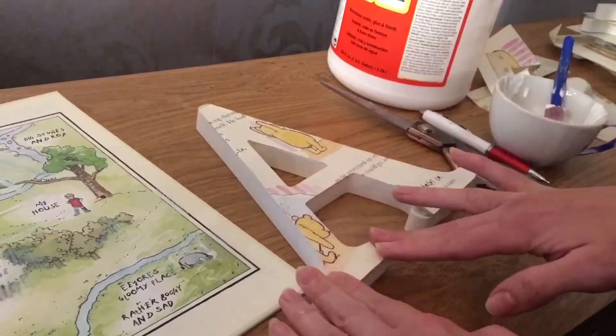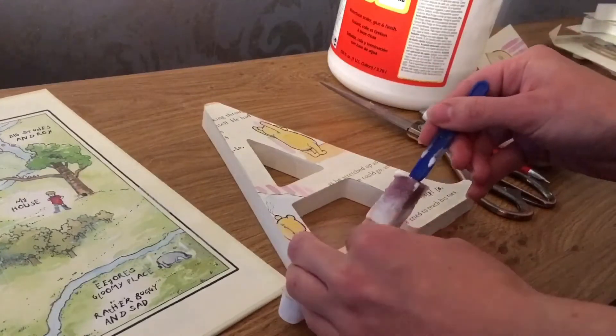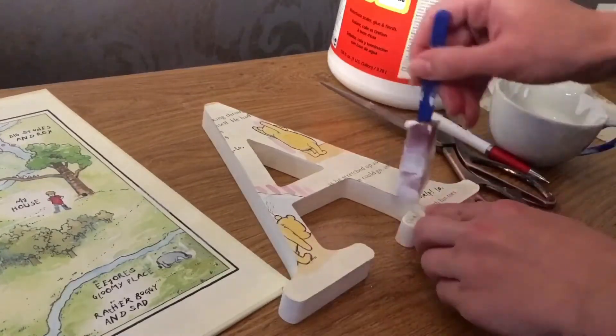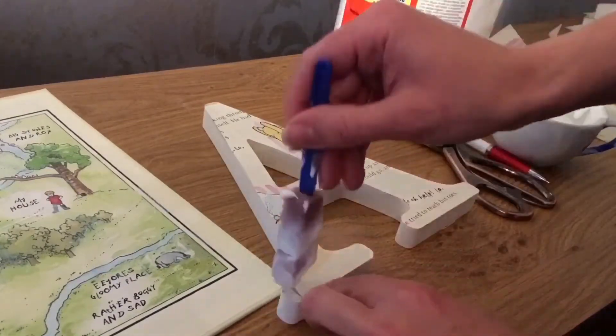Any edges that do come off just apply more Mod Podge. But make sure all the edges are stuck down because you don't want it peeling.